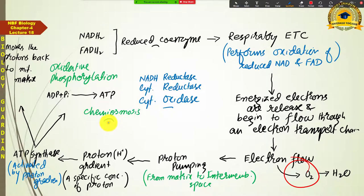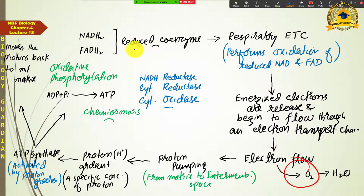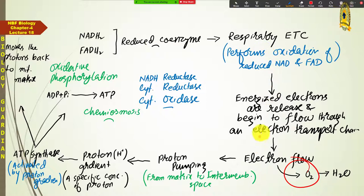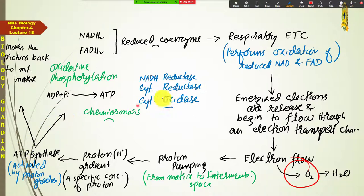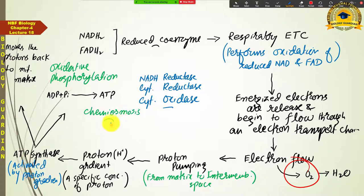Chemiosmosis is a mechanism in which electrons are released from a molecule, they flow through an electron transport chain, this electron flow is utilized in proton pumping, the proton gradient activates ATP synthase, and then ATP is produced. The name 'chemiosmosis' was given based on a theory first proposed by Peter Mitchell, who won the Nobel Prize in 1978.